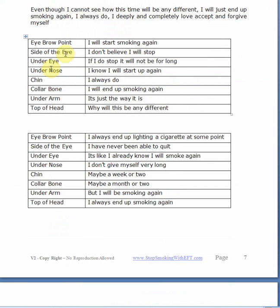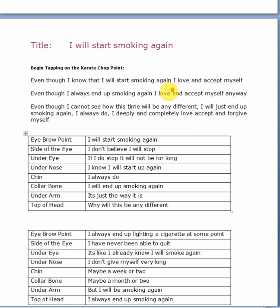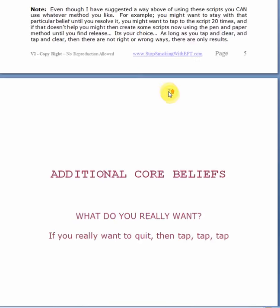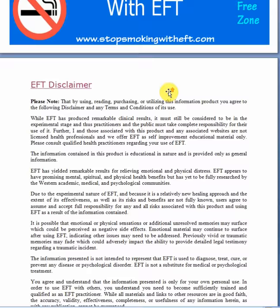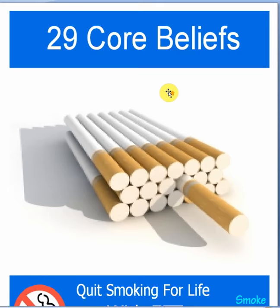The sequence phrases are fully laid out — side of the eyebrow point, tap this phrase; side of the eye, tap this phrase; under the eye, tap this phrase. Everything is laid out for you. That's 29 core belief scripts in that guide alone. So you've got the core guide, the core beliefs guide, and other guides with additional scripts in them as well.